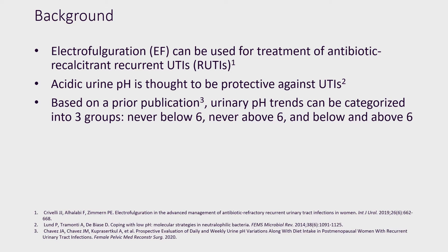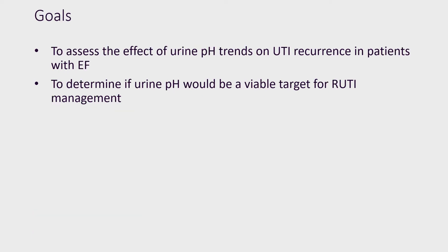We tracked urinary pH trends and identified three groups: never below pH of 6, never above pH of 6, and fluctuating below and above 6. Our study's main goal was to determine if these pH trends would change the rate of UTI recurrence in patients who had undergone electrofulguration, with the hypothesis that having a low urine pH would lead to a lower amount of UTIs.